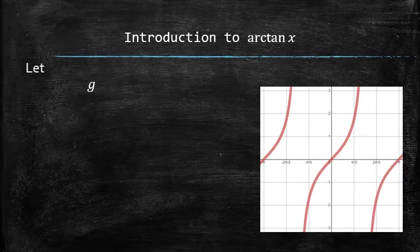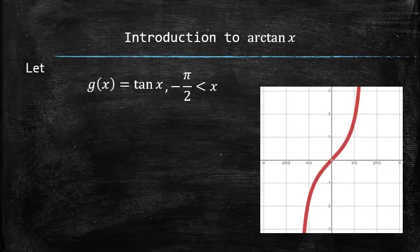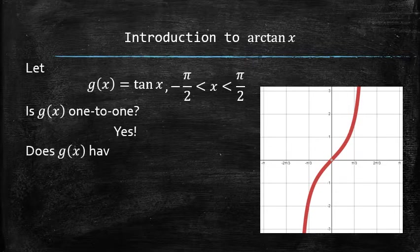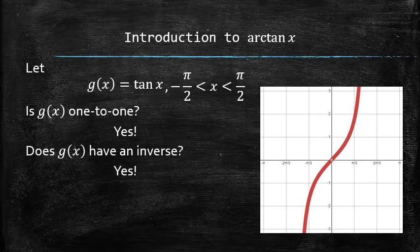Now, let's make a new function g(x) from the tangent of x by restricting the domain of the tangent function to the open interval between -π/2 and π/2. Is this function 1-to-1? The answer is yes, because it passes the horizontal line test. Does this function have an inverse? The answer is also yes, because all 1-to-1 functions have inverse functions. And here's what it looks like.